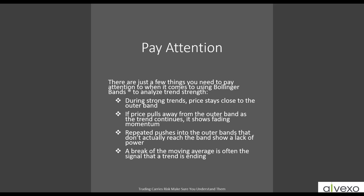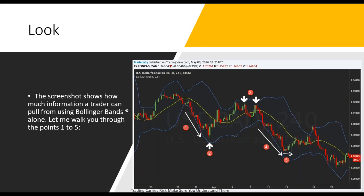We can use Bollinger Bands to analyze the strength of trends. During strong trends, price should stay close to the outer band — either the upper band in an uptrend or the lower band in a downtrend. If price pulls away from the outer band as the trend continues — if you see price continuing upward but being rejected by that upper band — it's telling you the momentum of that trend is fading. Repeated rejections that don't actually reach the band show a lack of power. A break of the moving average is then often the signal that the trend has ended. There are four valuable steps to take.